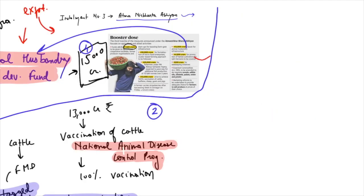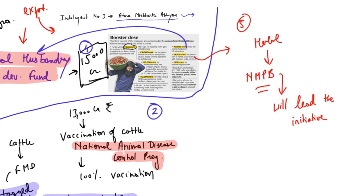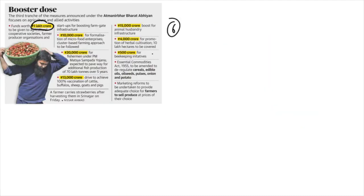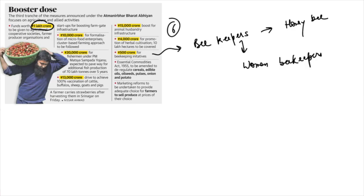Focus on herbal cultivation will also be made and 4,000 crore rupees have been earmarked for that. The National Medicinal Plant Board will be taking up this initiative. There is also a small initiative for beekeepers, with respect to collection and processing centers, and the traceability of honeybees. The main thrust here will be on women beekeepers.